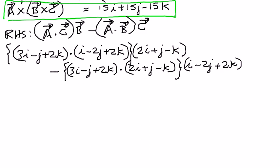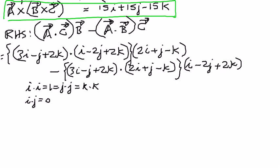We use the dot product properties: i·i = 1, j·j = 1, k·k = 1, and i·j = 0, j·k = 0, k·i = 0. Cross-unit-vector dot products are all zero; we will apply these while expanding.